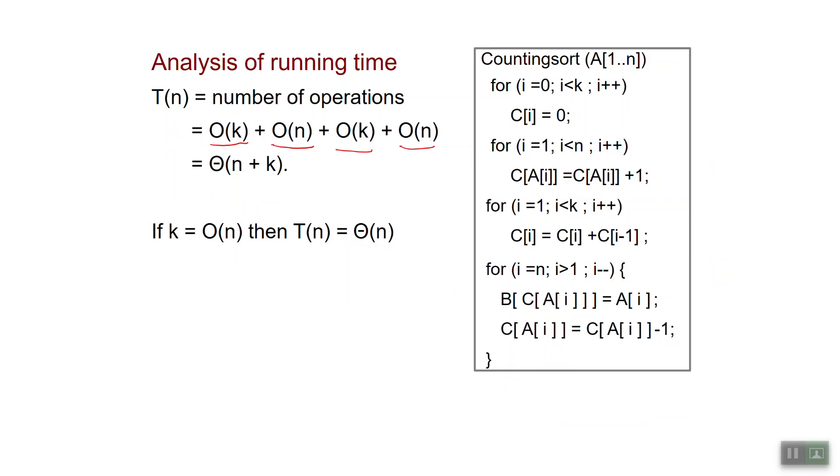So the number of operations is theta of n plus k. And in particular if k is order of n, so if k is small, then the number of operations is theta of n linear time. And the linear time is pretty much as good as it gets because you have to read at least the input. If k becomes large then counting sort by itself doesn't go very fast. But we will see later a way in which you can use counting sort and sort fast even if k is a bit larger than n.